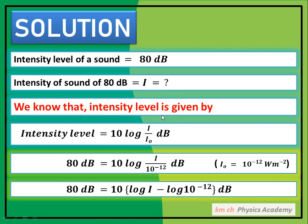We know that intensity level is given by: انٹینسٹی لیول = 10 log(I/I₀) dB۔ یہاں I intensity of sound ہے اور I₀ lowest یعنی faintest intensity ہے جو normal human ear سن سکتا ہے۔ اس کی value ہمیں خود یاد ہونی چاہیے کیونکہ یہ question میں given نہیں ہوتی اور MCQs میں بھی اہم ہے۔